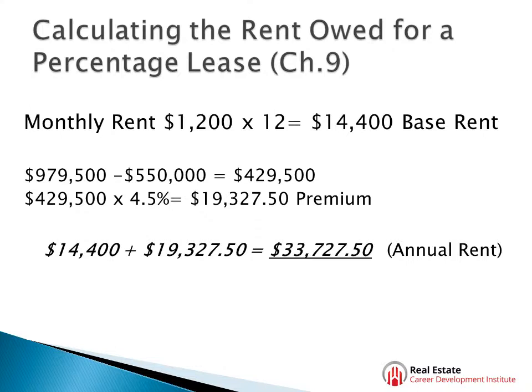The second thing you need to do is calculate how much that premium is going to cost you for the sales over $550,000. So subtract the $550,000 from the $979,500 that you made. That leaves you with $429,500 that you've got to pay the 4.5% premium on.